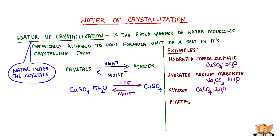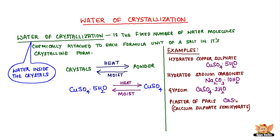On heating gypsum at 373 K, gypsum loses water molecules and becomes plaster of Paris, i.e., calcium sulphate semi-hydrate CaSO4·½H2O. It changes to gypsum once again on mixing with water.